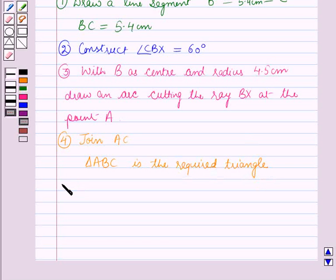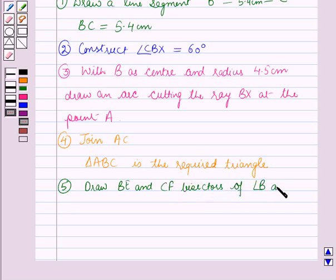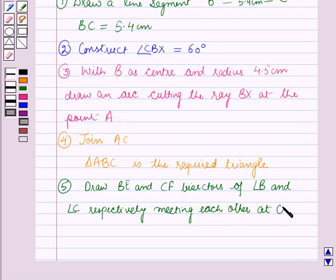Now, in the next step, draw BE and CF, the bisectors of angle B and angle C respectively, meeting each other at O.